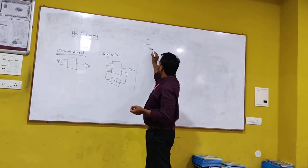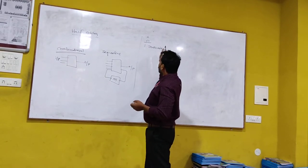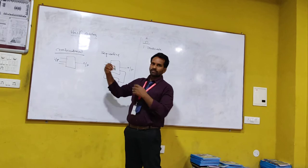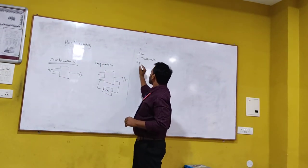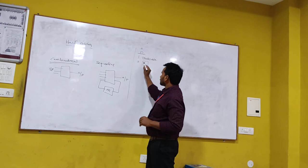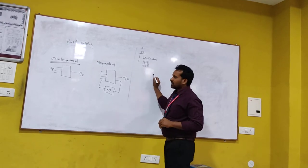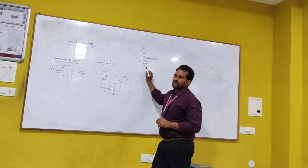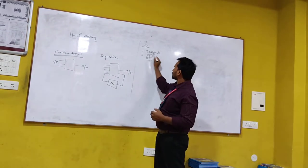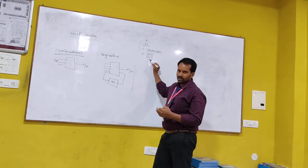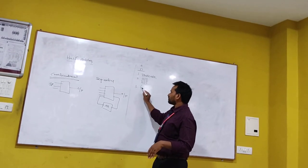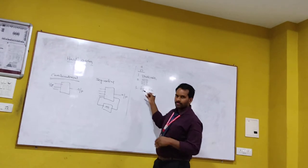First, we need to have a truth table of the circuit that we are going to design. The second step is from the truth table we go to K-maps. The K-map is used for equation minimization. From the K-map we get minimized equations. Once we have the equations, we implement the logic diagram from those equations.